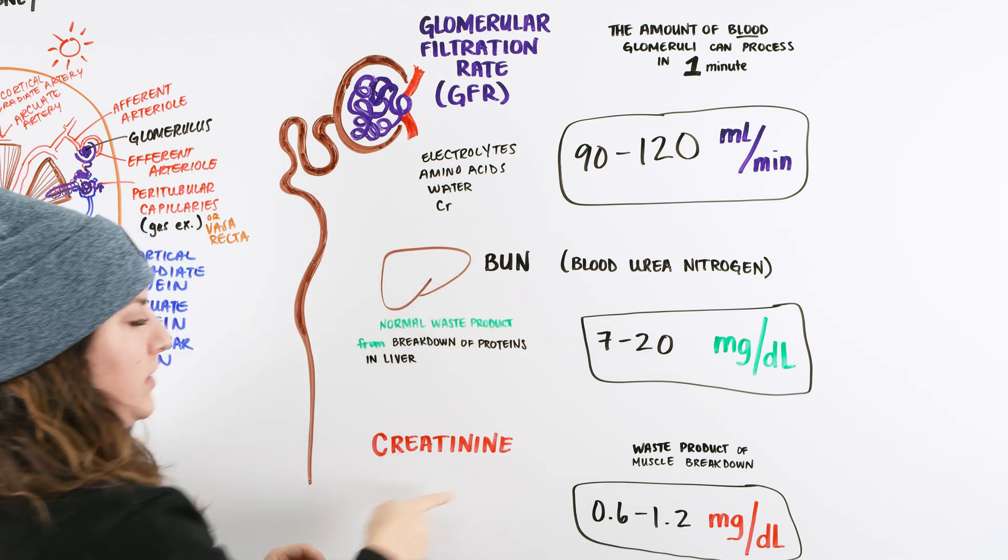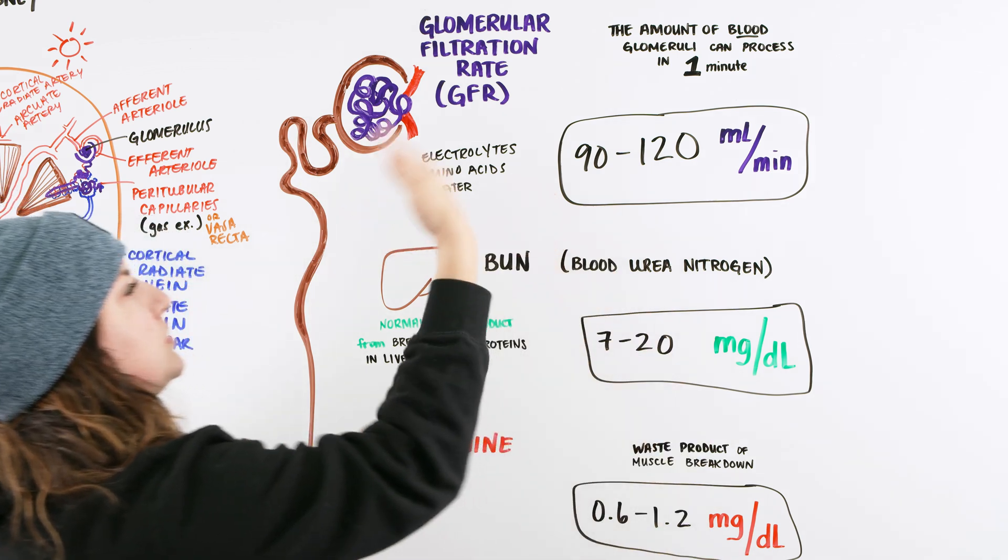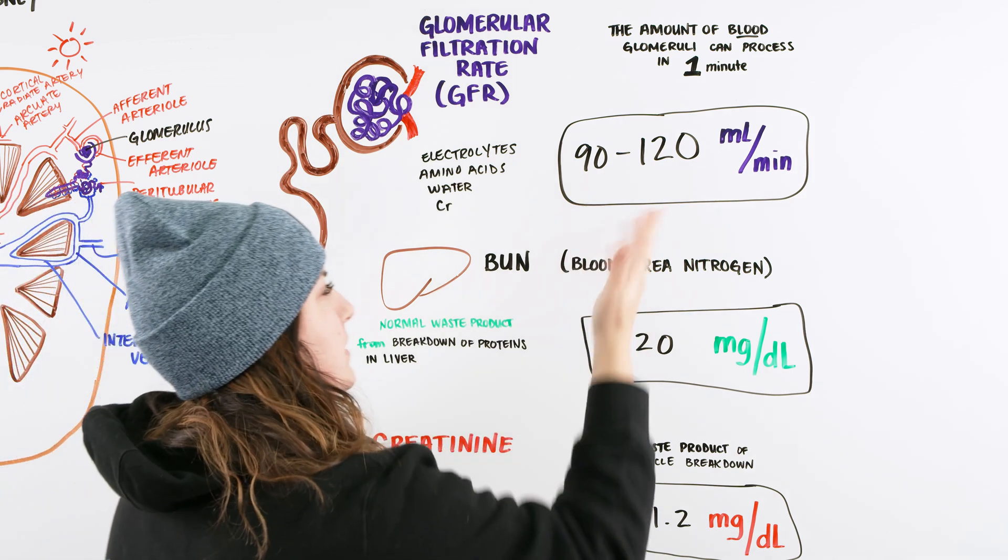There is a BUN to creatinine ratio we will talk about in future videos. And then there's also the GFR, which is the rate at which our blood is processed through our glomerulus, which is 90 to 120.